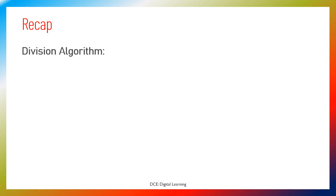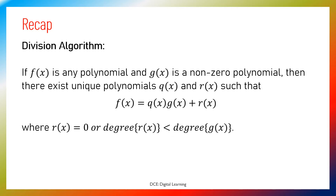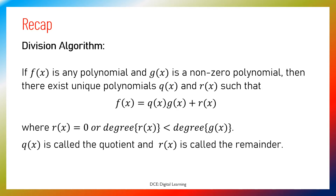Division Algorithm: if f(x) is any polynomial and g(x) is a non-zero polynomial, then there exist unique polynomials q(x) and r(x) such that f(x) equals q(x) times g(x) plus r(x), where r(x) equals 0 or the degree of r(x) is less than the degree of g(x). q(x) is called the quotient and r(x) is called the remainder.